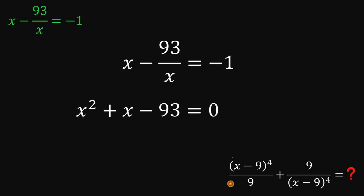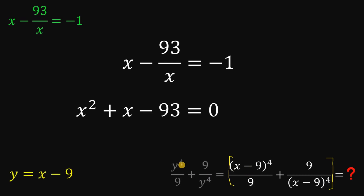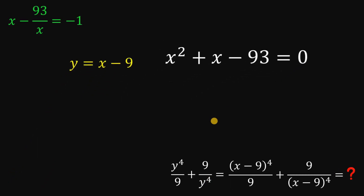From here, let's focus first on the expression that we want to evaluate. To make this simple, let y be equal to x minus 9. So our expression that we want to find is now y to the fourth power over 9, plus 9 over y raised to the fourth power. We will use these two equations to answer this question.